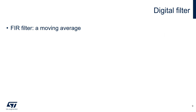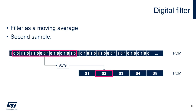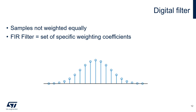You can think of the operation of FIR filtering as a moving average. Each output sample is computed as an average of the last N input samples — the first sample, the second sample, the third sample, and so on. The main difference from simple averaging is that the input samples are not weighted equally; instead, specific coefficients are used to weight each input sample. The FIR filter can be thought of as the set of specific coefficients used to weight the input samples in order to obtain a specific effect on the output.